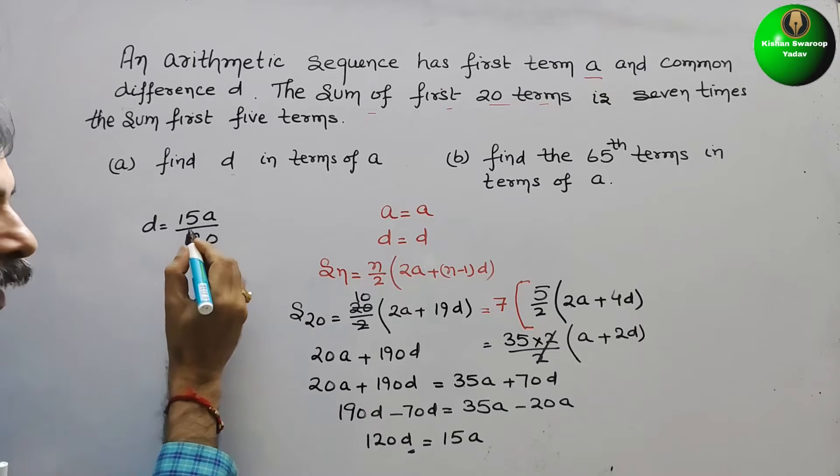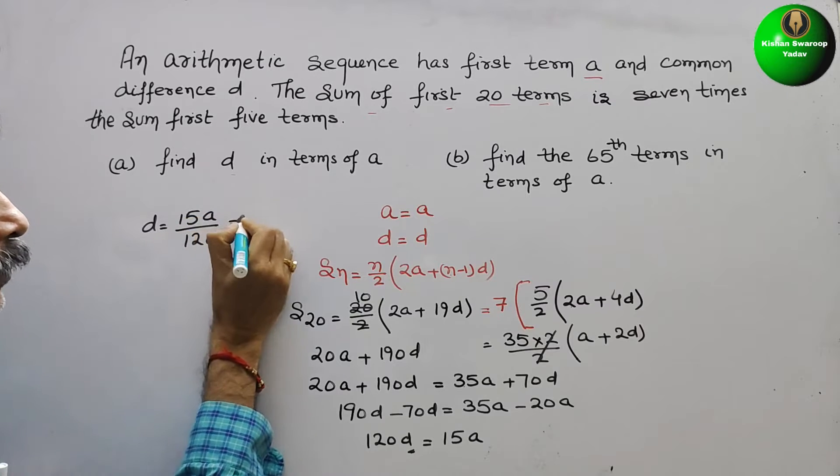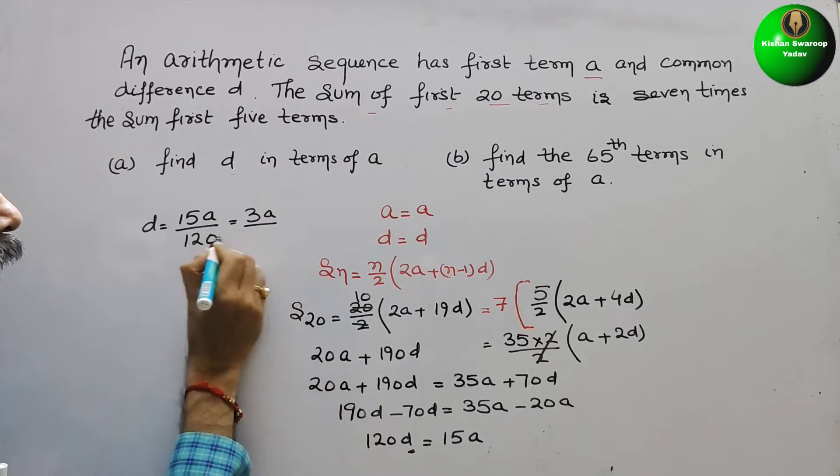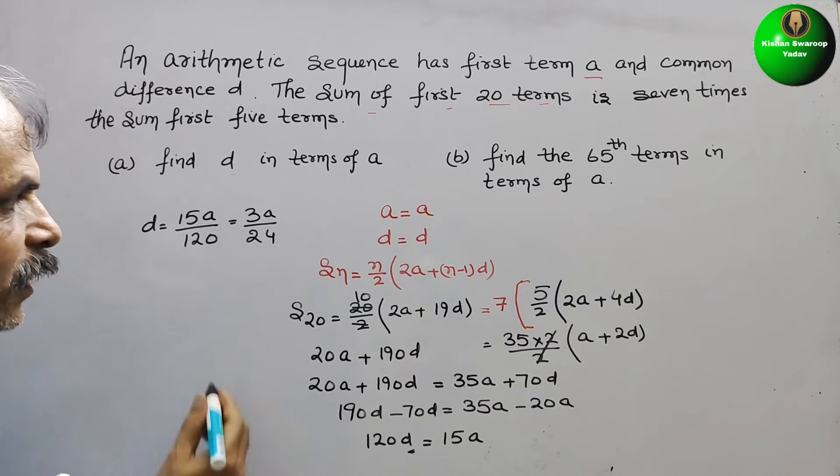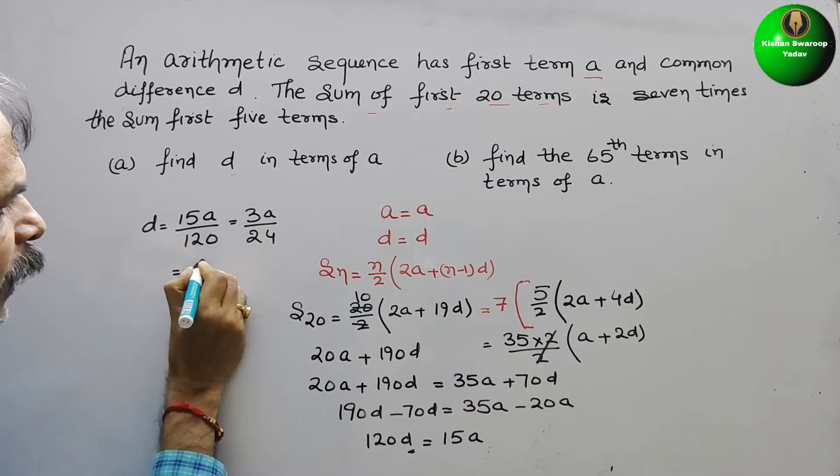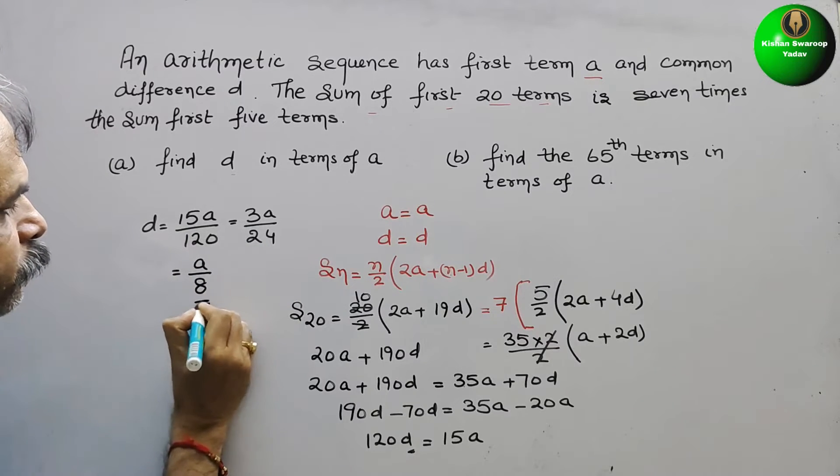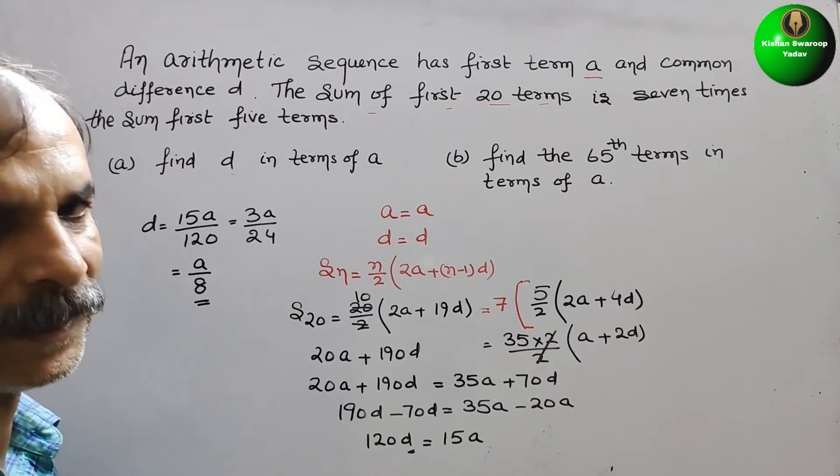Now reduce it by 5, so here comes 3A by 24. Now again reduce by 3, so we will get A by 8. So D is A by 8.